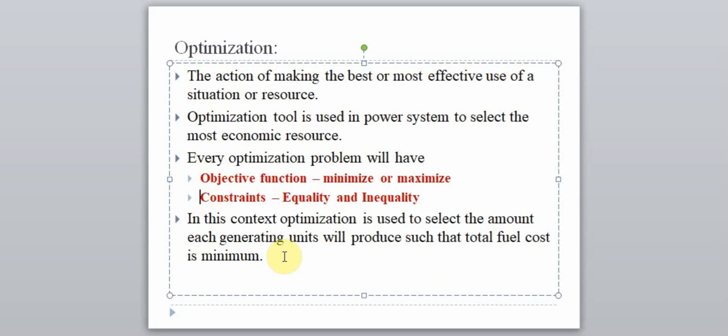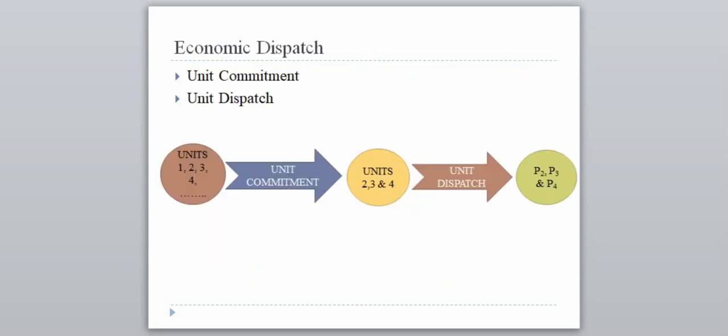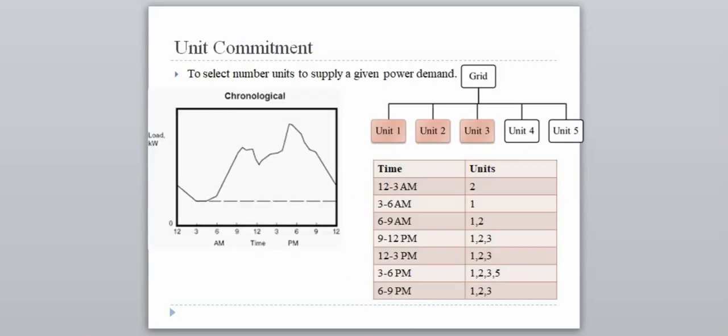In the power system context, we are selecting how much each generating unit will produce so that the total fuel cost is minimum — that is the actual problem formulation of an economic dispatch problem. Coming to economic dispatch, there are two parts: unit commitment and unit dispatch.